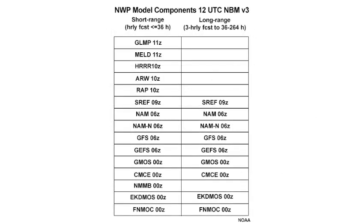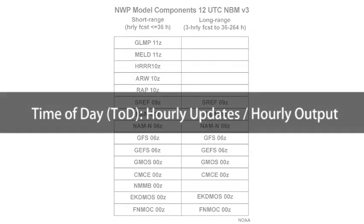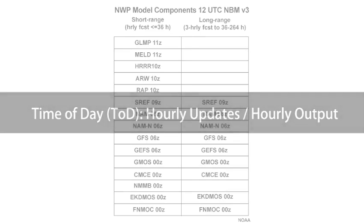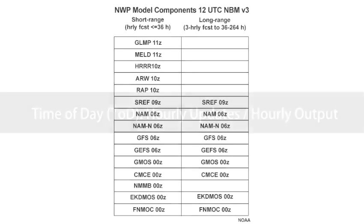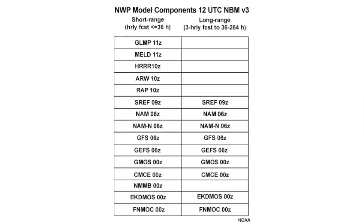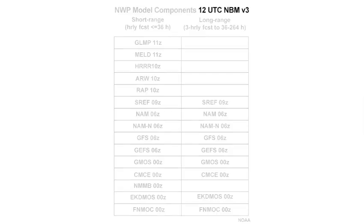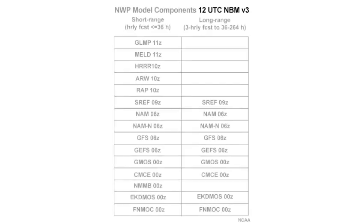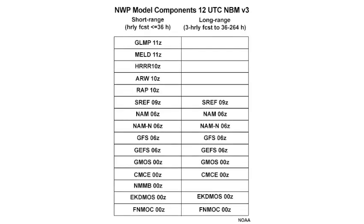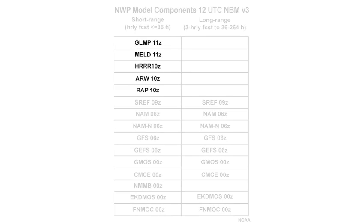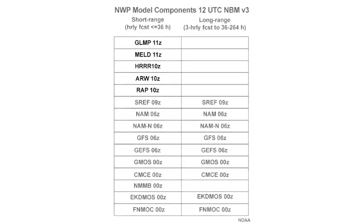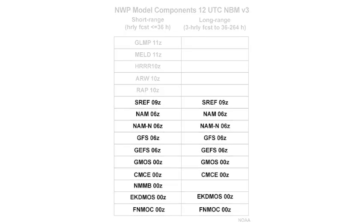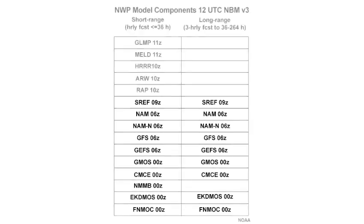NBM version 3 uses a new concept called time of day. In time of day, the NBM timestamp reflects the blend start time, not the cycle of the included model runs. In other words, the 12 UTC NBM includes the latest data from each model component available at 12 UTC. This includes components from 10 and 11 UTC cycles, as well as others from 0 and 6 UTC cycles.